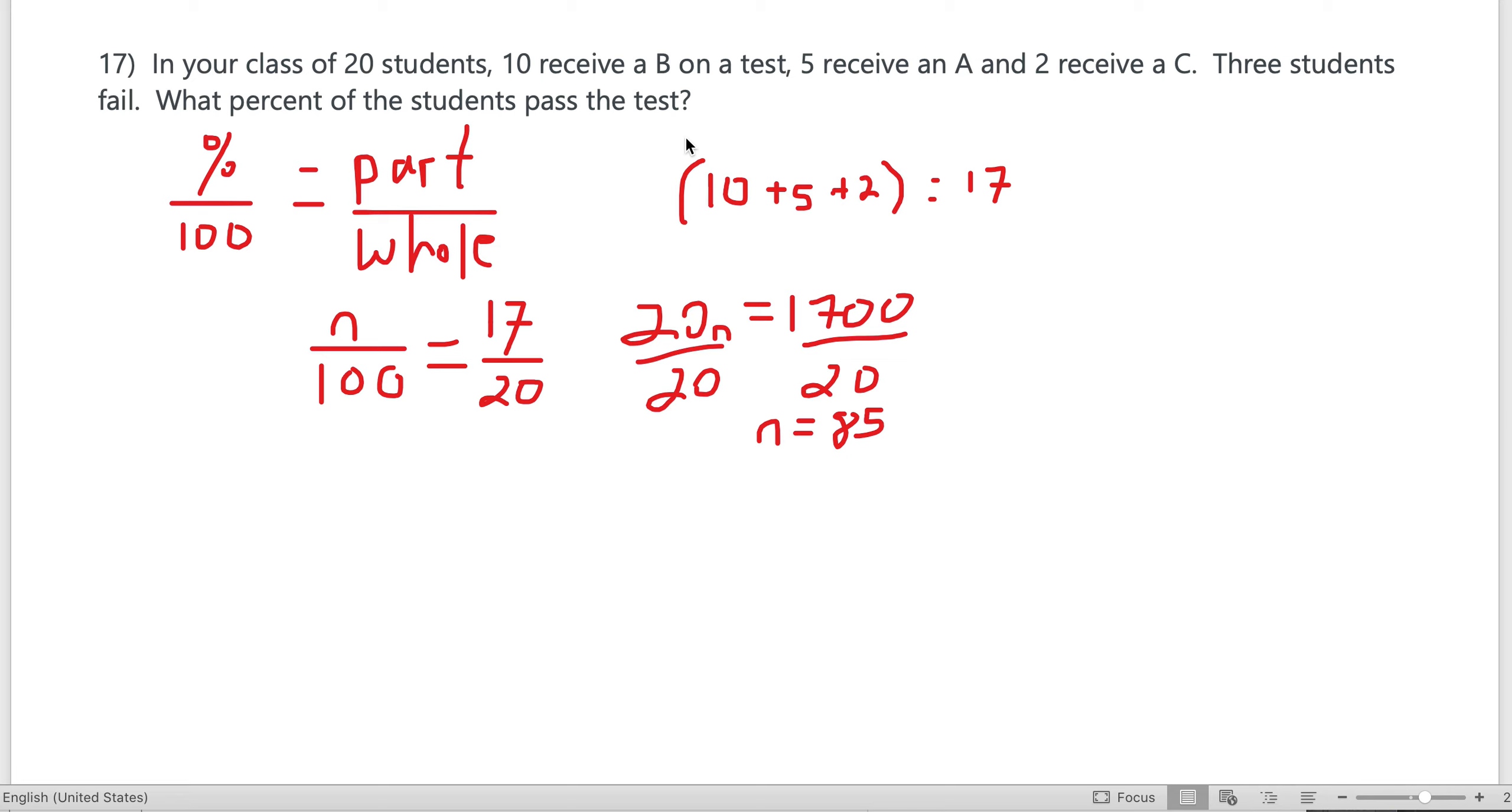Last but not least, number 17: In your class of 20 students, now you're a teacher, ten receive a B on a test, five get an A, two get a C, three students fail. What percent of students pass your test? Your principal walks in and says, 'What percent of the kids pass the test?' Percent over 100 equals the part that passed, which is 17.